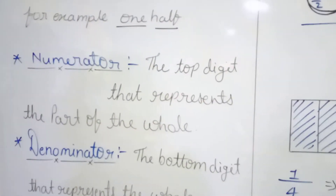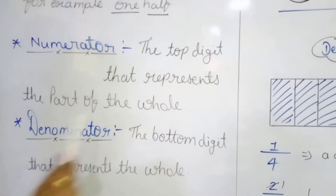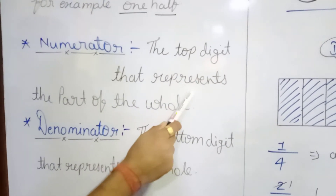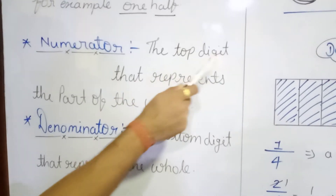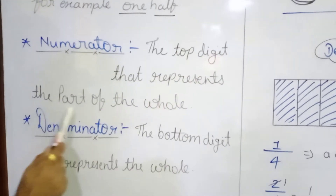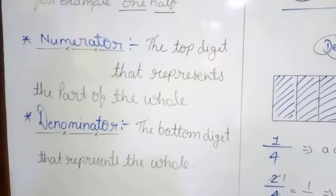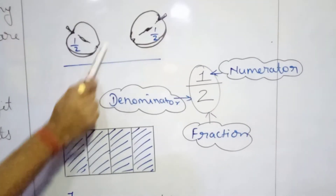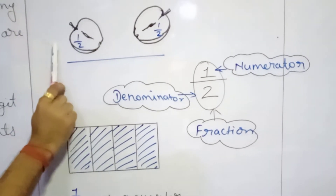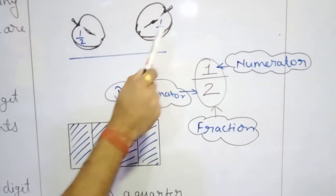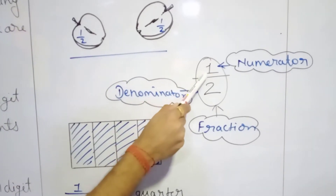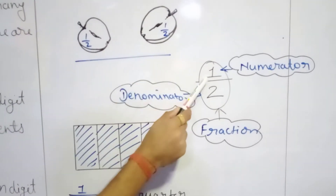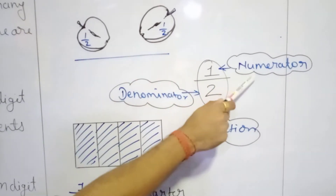Whenever we are talking about the numerator, what is it? The top digit that represents the part of the whole is called the numerator. In our example, if I am talking about this 1 part - the first piece - that is the part of the whole. The total we have is 2, and out of that we are talking about this first piece, so that is 1. That is called the numerator.